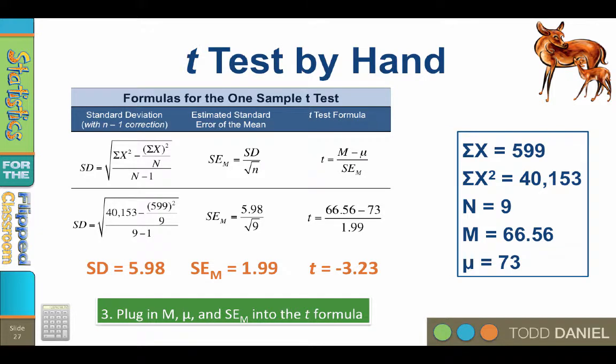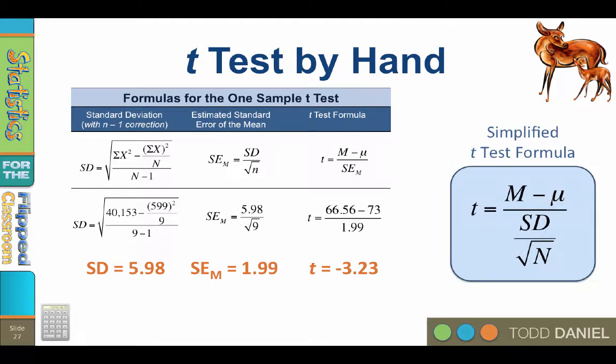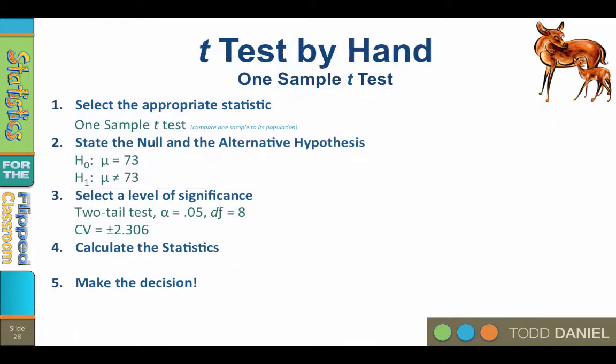There is also a unified t-test formula with all of the steps in one formula, which might be simpler to use once you understand each step. It is exactly the same formula as we just used. So the answer to step 4 is t(8) equals negative 3.23, p less than 0.05.